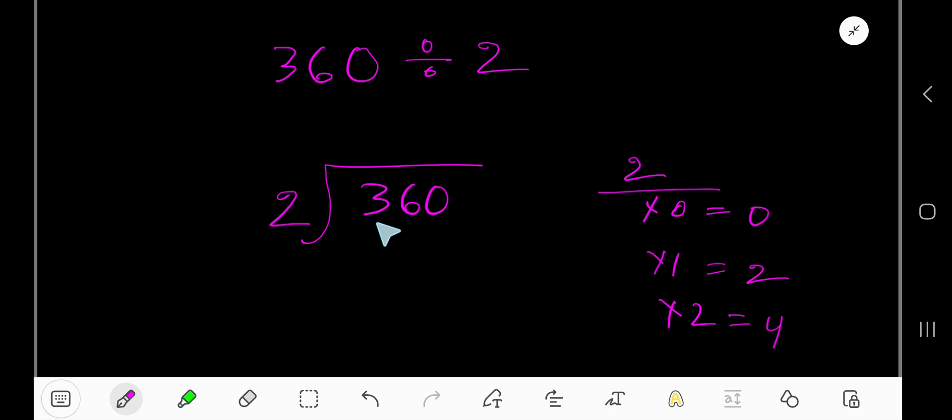2 goes into 3 how many times? 1 times 2, that gives us 2. If you subtract, then we are getting 1. Then bring down this 6.